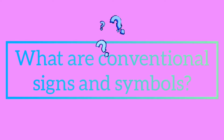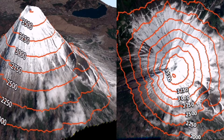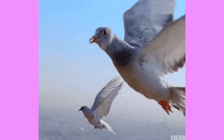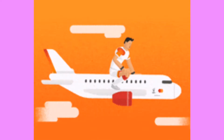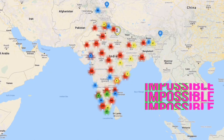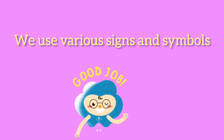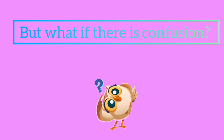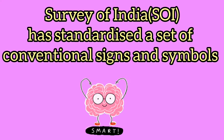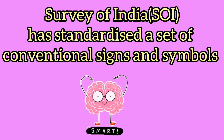What are these conventional signs and symbols? We know that topographical maps give us a bird's eye view — from above, like from an airplane. It is impossible to label every single feature in words on a map. Therefore we use various signs and symbols, and to avoid confusion the Survey of India has standardized a set of conventional signs and symbols to be used in topographical maps.